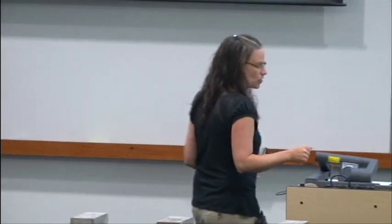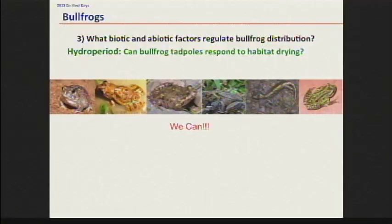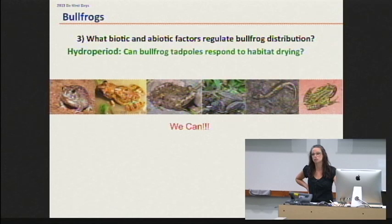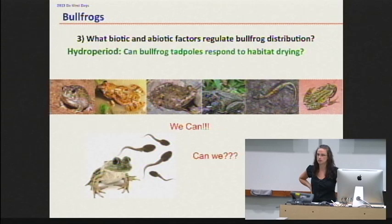The plan was: let all the natives get out, but at the end of the summer when there's only bullfrog tadpoles left, drain the pond and kill and strand those tadpoles. We wanted to figure out if that was going to work, because if it didn't, bullfrogs could speed up development and get out anyway, and we might be selecting for a super bullfrog. We know that some amphibians can speed up development in response to a decreasing hydroperiod — the Pacific chorus frog, the long-toed salamander, and the red-legged frog can do this. But can the bullfrog? That was the big question.